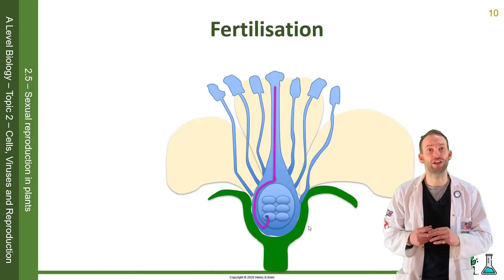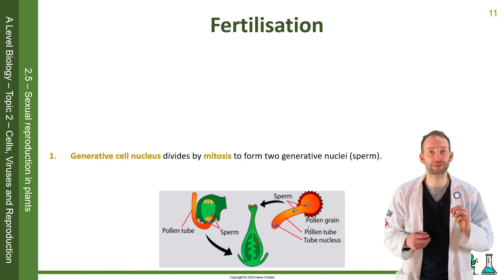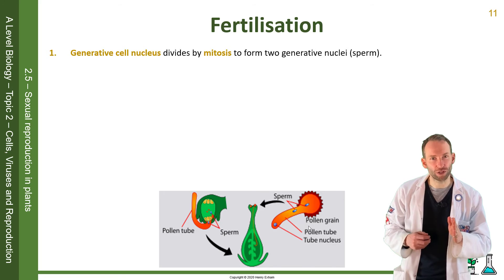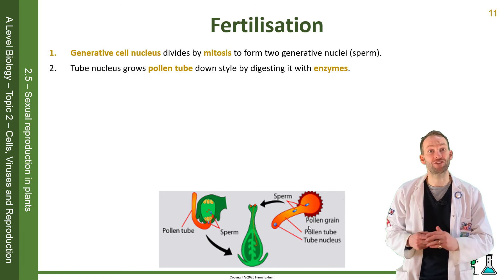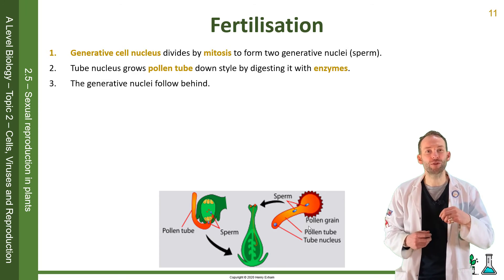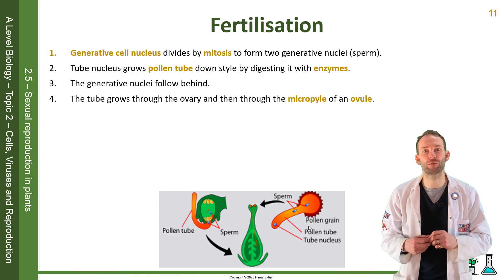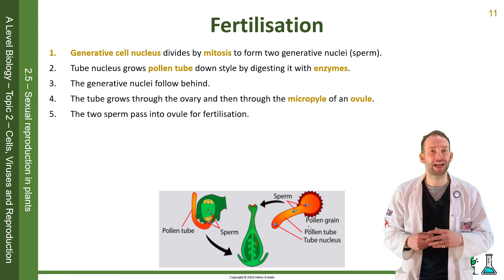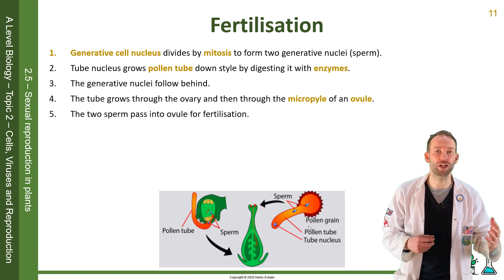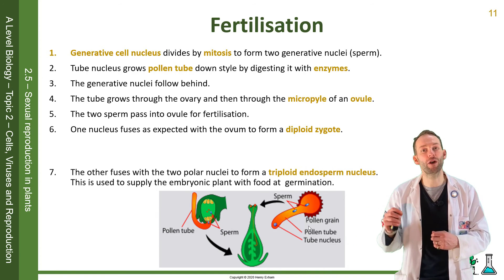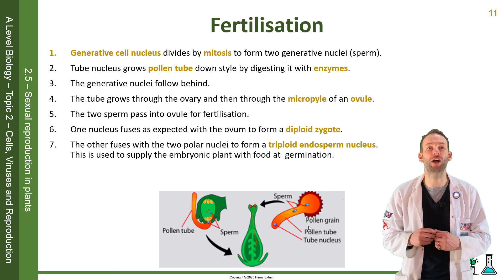In fertilisation in detail: the generative cell nucleus divides by mitosis to form two generative nuclei after pollination. Then the tube nucleus grows its pollen tube down the style by digesting it with enzymes, and the generative nuclei follow behind. The tube grows through the ovary and through the micropyle of an ovule. The two sperm pass into the ovule — one nucleus fuses with the ovum to form a diploid zygote, and the other fuses with the two polar nuclei to form a triploid endosperm nucleus.